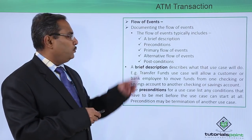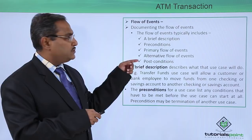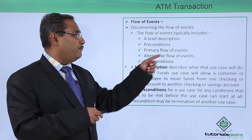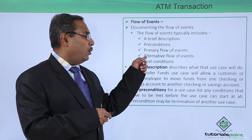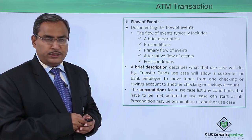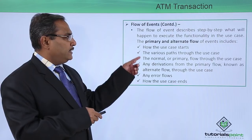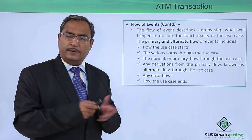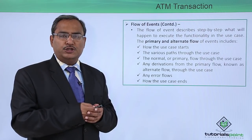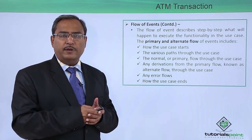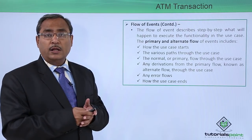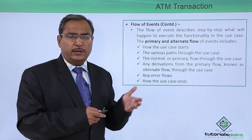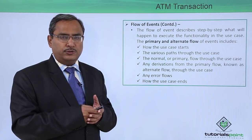We are covering all these points: brief description, preconditions, primary flow of events, alternative flow of events, and then post conditions. The primary flow occurs when conditions are true; alternate flow when conditions are false; and error flow occurs whenever some errors arise.